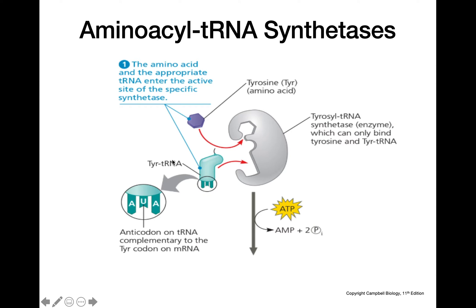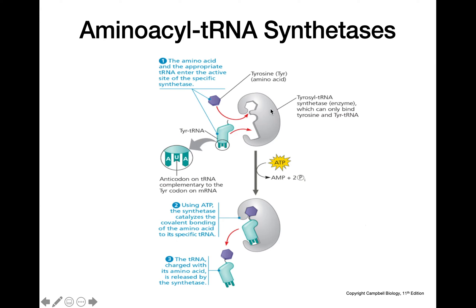Looking at this process more closely using tyrosine as an example: tyrosine and the tRNA specific for tyrosine enter the active site of the aminoacyl tRNA synthetase. This synthetase is highly specific for only this combination of tRNA and amino acid. Once they're in the active site, ATP is hydrolyzed, and that hydrolysis provides the energy to attach the amino acid to the tRNA. This loaded tRNA then exits the active site and goes on to the ribosome to add the amino acid to the polypeptide chain.